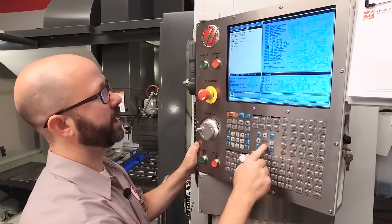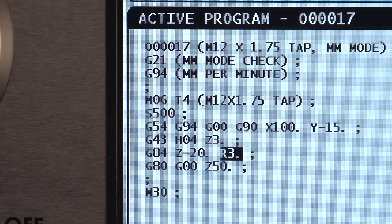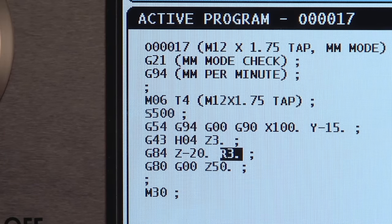Let's go ahead and enter that into our program. I'm going to enter my RPM, S500, and my feed rate, F875 decimal place.